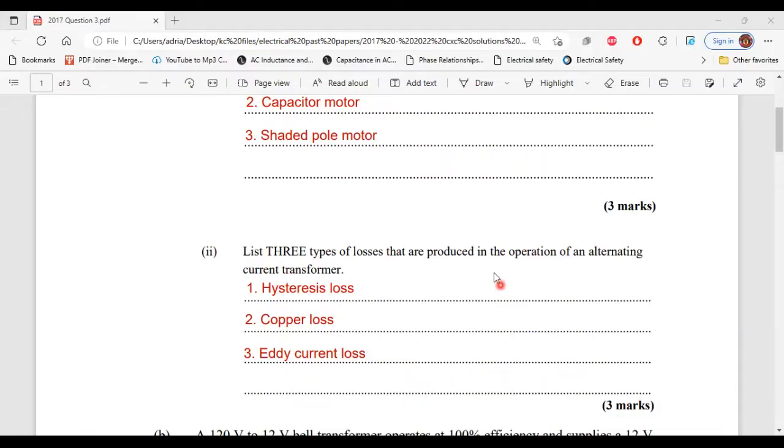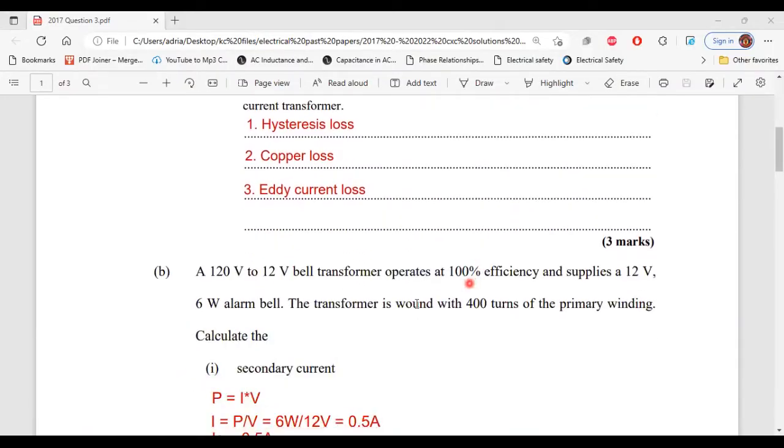Let's move on to part B. It says, a 120-volt to 12-volt bell transformer operates at 100% efficiency and supplies a 12-volt, 6-watt alarm bell. The transformer is wound with 400 turns of the primary winding. Part one of B says, calculate the secondary current.